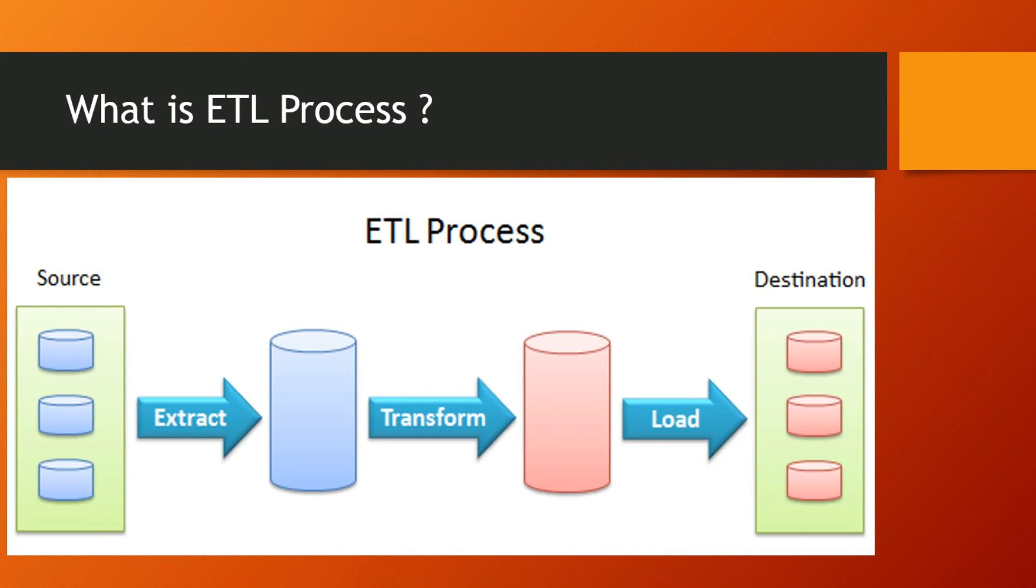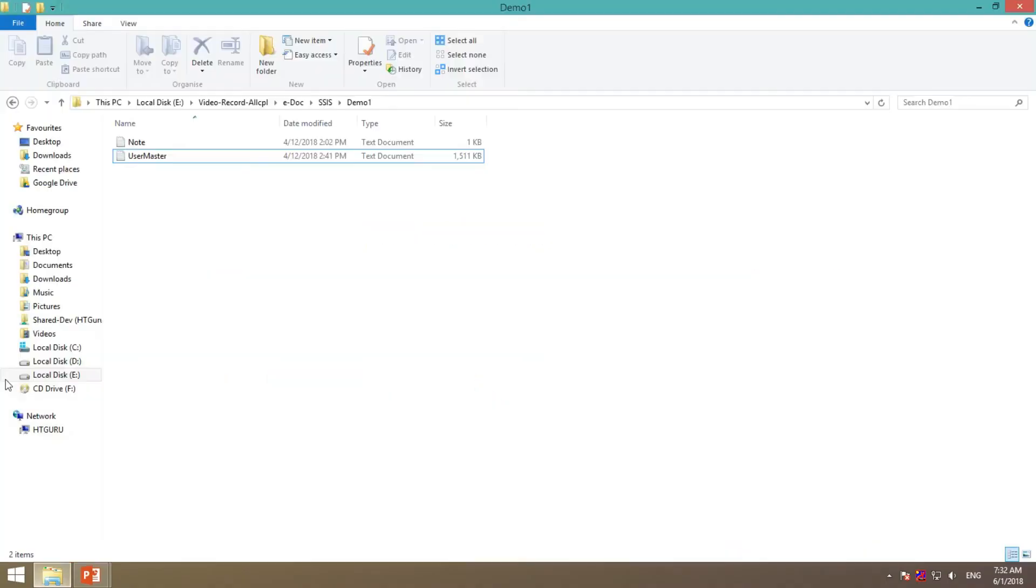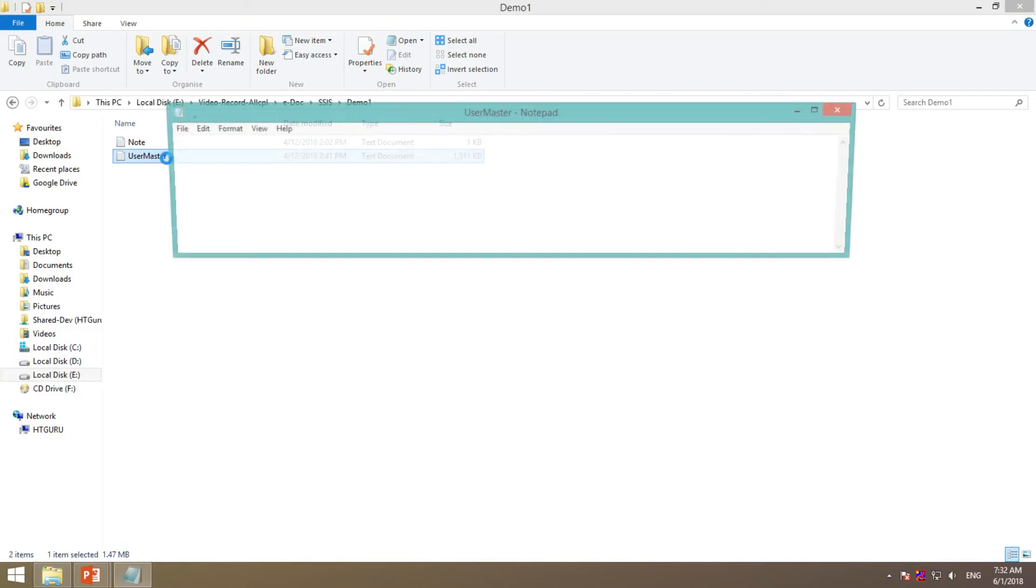SSIS extracts this file, then the next step transforms this data as per the requirement, and finally loads this data into the destination. This is our source and this is our destination application. Let's check the same example with a practical.